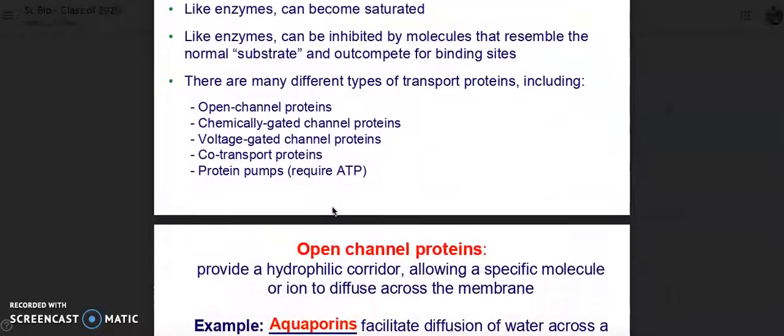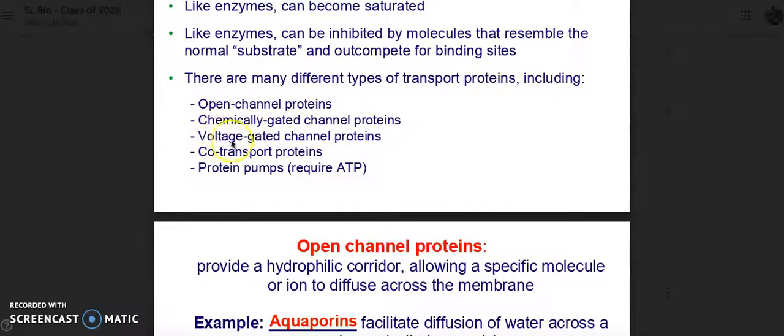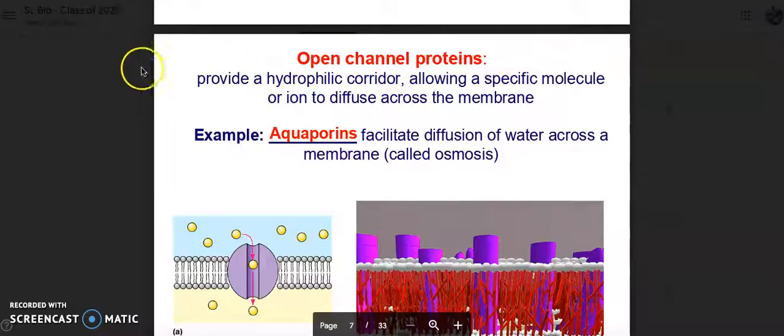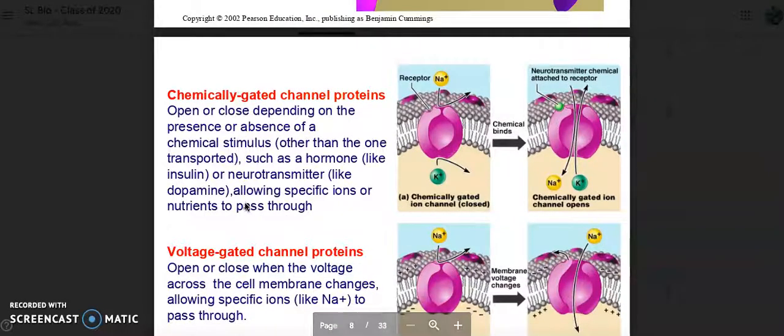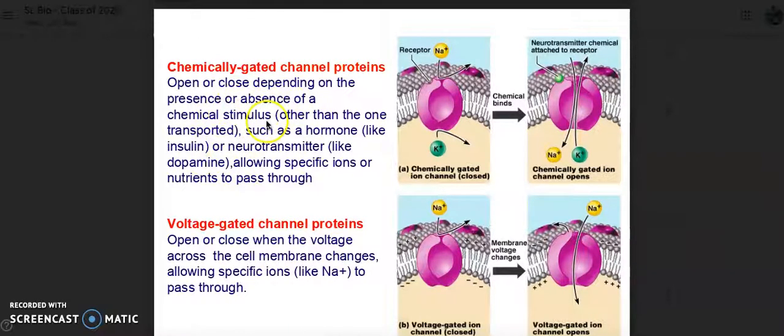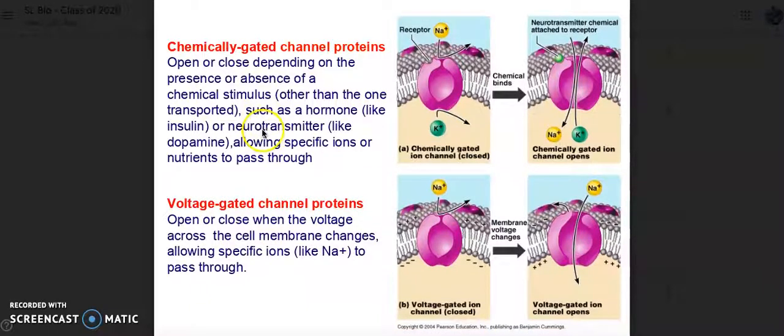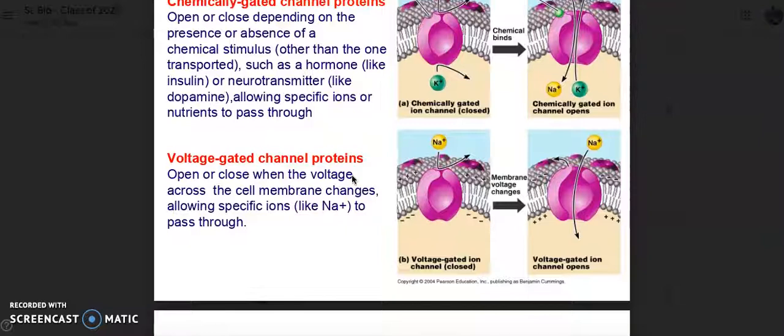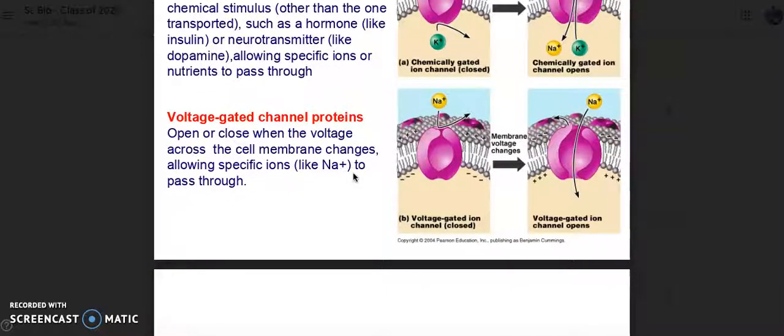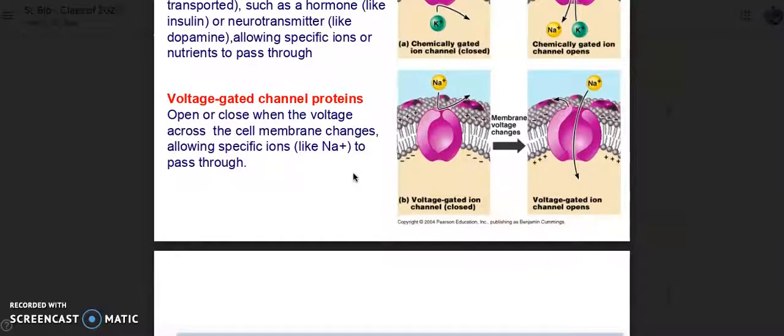There are many different types of transport proteins, including open channel proteins, chemically gated channel proteins, voltage gated channel proteins, co-transport proteins, and protein pumps which require ATP. Open channel proteins provide a hydrophilic corridor, allowing a specific molecule or ion to diffuse across the membrane. An example would be aquaporins, which facilitate diffusion of water across the membrane called osmosis. Chemically gated proteins open or close depending on the presence or absence of a chemical stimuli other than one transported, such as a hormone like insulin or a neurotransmitter like dopamine, allowing specific ions or nutrients to pass through. And then there's voltage-gated channel proteins, which open or close when the voltage across the cell membrane changes, allowing specific ions like sodium to pass through.